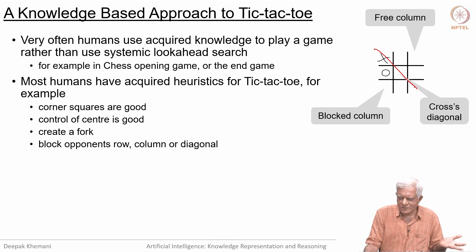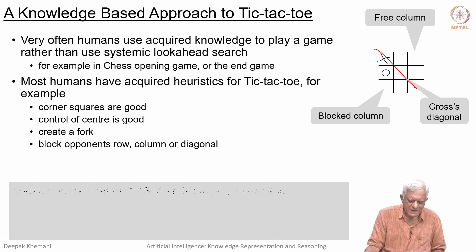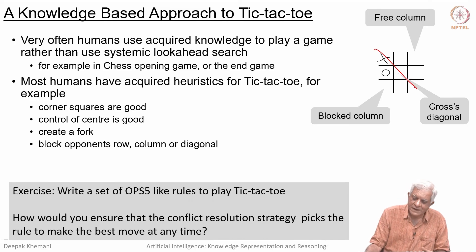For example, you might simply say start with a corner, or if the opponent has started with a corner, then play in such a position. Try to enumerate the different rules so that you have a rule-based program to play the game. That is an alternative that you can try out. Write a set of OPS5-like rules to play tic-tac-toe, and how would you ensure that the conflict resolution strategy picks the right rule? You may have a rule which says now it is time to play in the side, now it is time to place in this corner—whatever the description you are using. What conflict resolution strategy would you use?